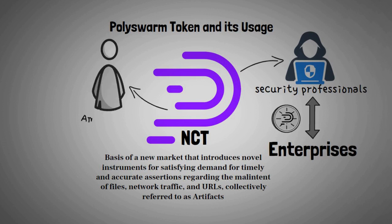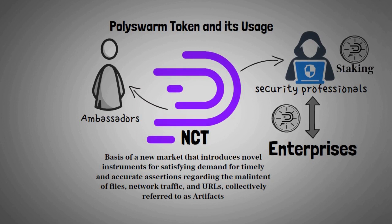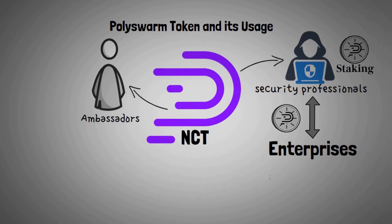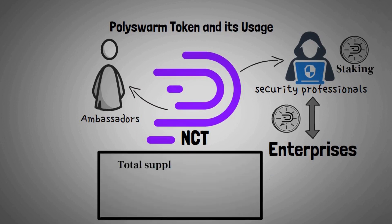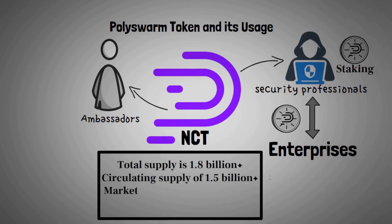The Nectar token can also be used by ambassadors on the platform. An ambassador can post bounties for determining the maliciousness of a file, URL, or another artifact. Nectar can also be used by security professionals to stake their predictions against artifacts — if they are pretty sure of their findings, they can stake a lot of Nectar. The total supply is 1.8 billion plus, with a circulating supply of about 1.5 billion and a market cap of about 48 million dollars.